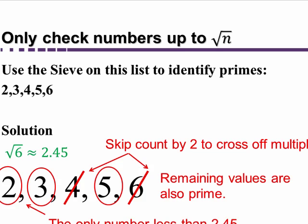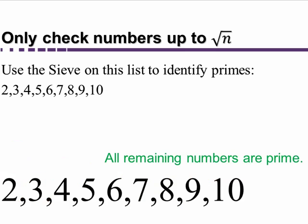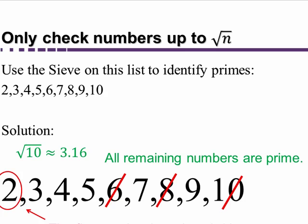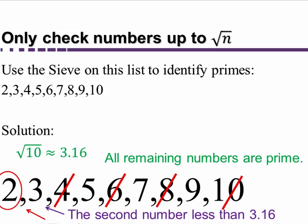Let's try a slightly longer list. We're going to use the sieve on the list from 2 to 10. We find the square root of 10, which is approximately 3.16. So 2 and 3 are the only numbers less than 3.16. We cross off the multiples of 2, we cross off the multiples of 3, and all remaining numbers are prime.